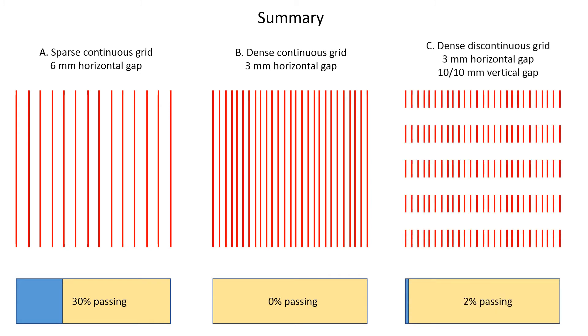In the third arrangement, the obstacle is a dense discontinuous grid. The microwave is almost completely blocked.